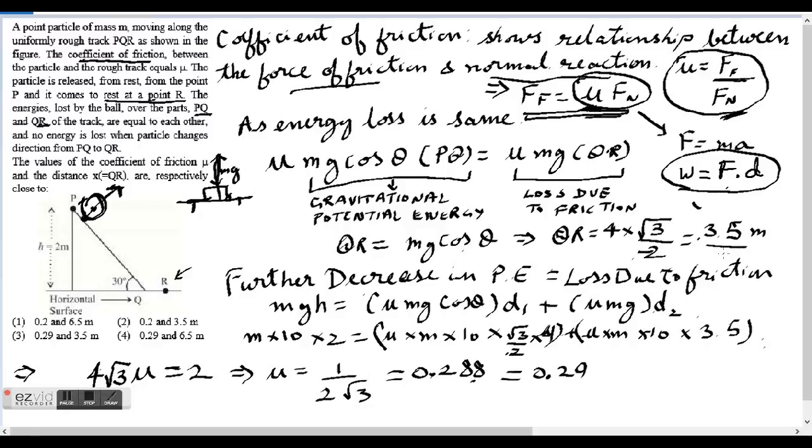Question number 3 of JEE Main 2016. A point particle of mass M is moving along the uniformly rough track PQR as shown in the figure. The coefficient of friction between the particle and rough track equals mu.